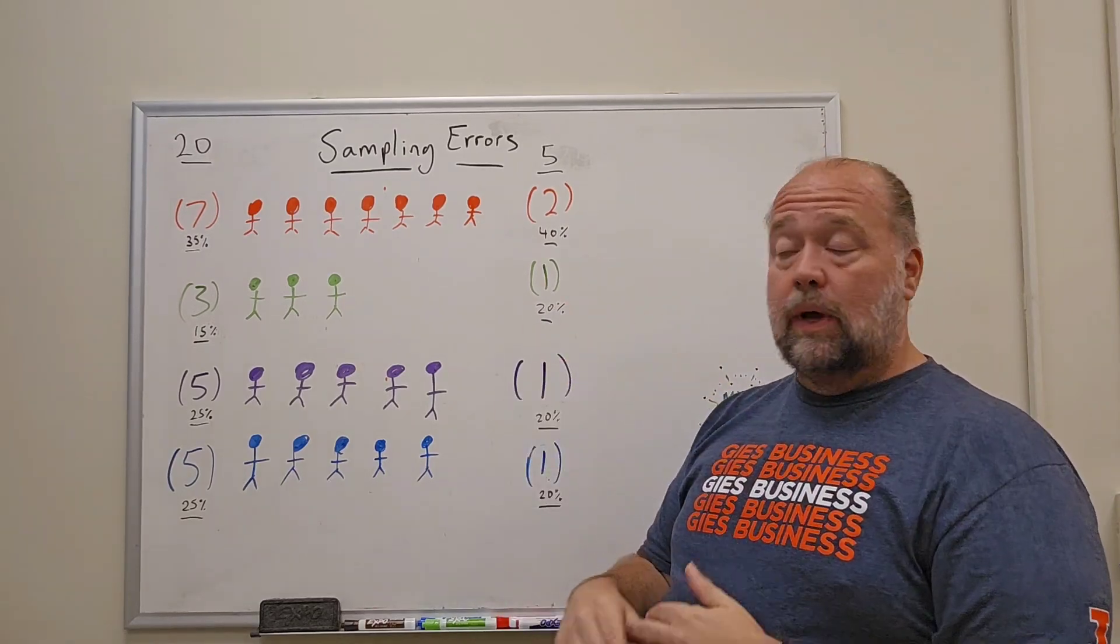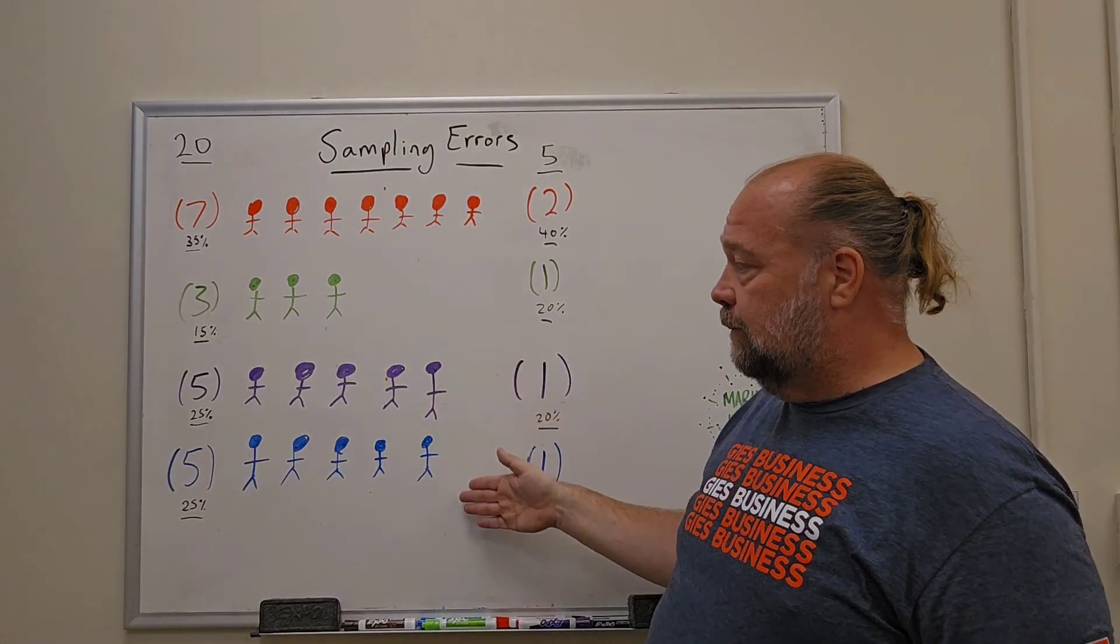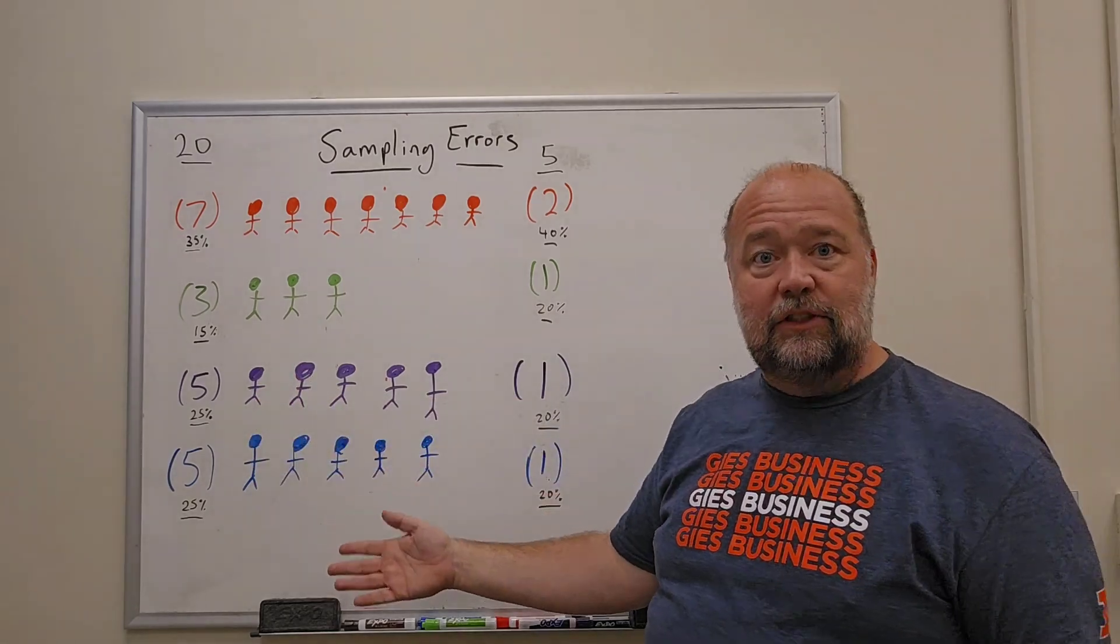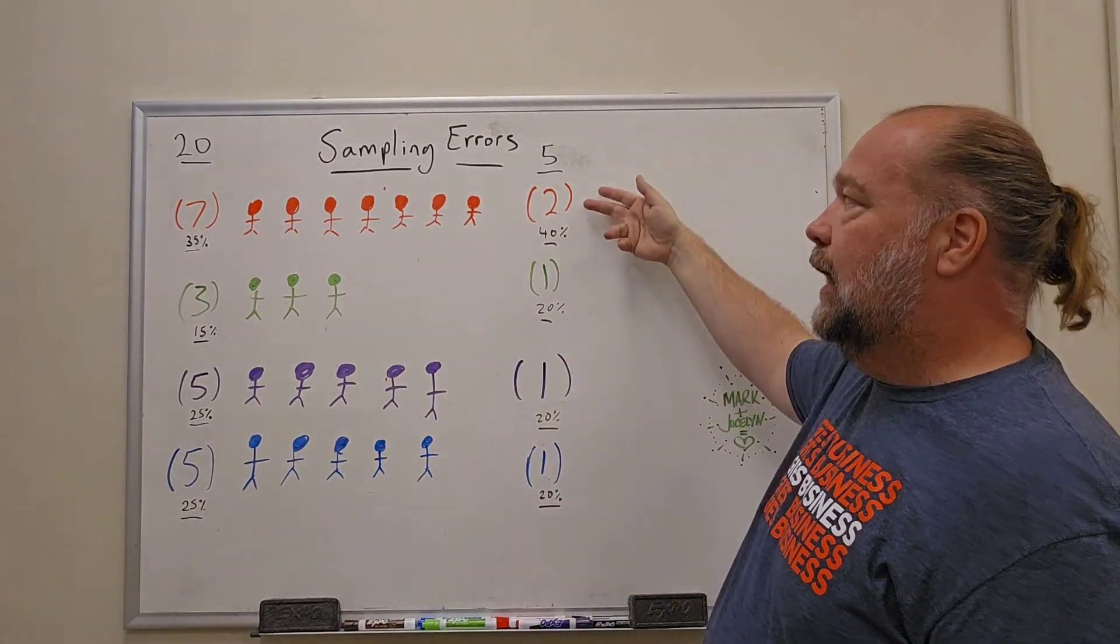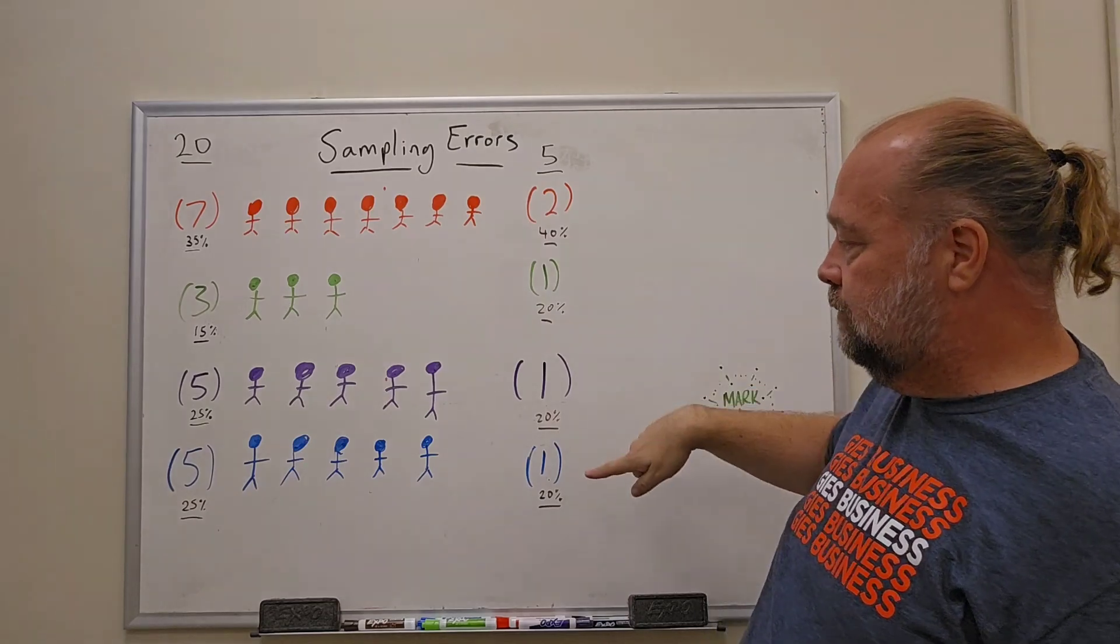In the sample, they are a bigger percentage than what they are in the actual population. And it can work the other way as well. For example, the purples and the blues, they are 25% of the population each. However, if I'm only going to have five, and I want to make sure everybody's on there, I got two for the red, one for the green, one for the purple, one for the blue.